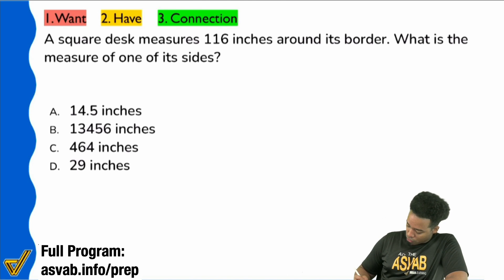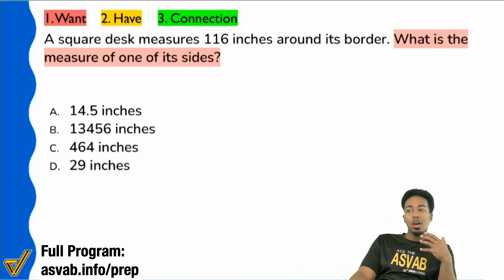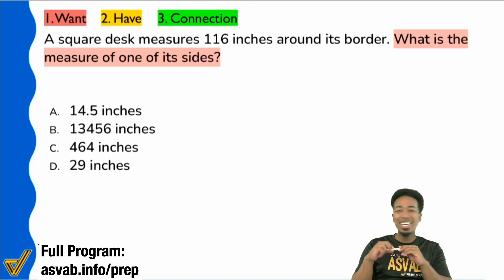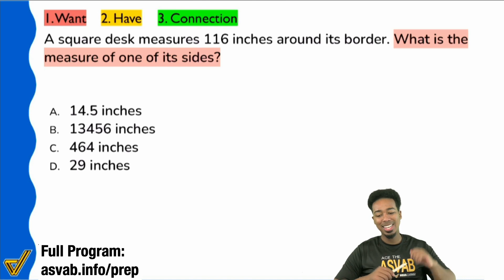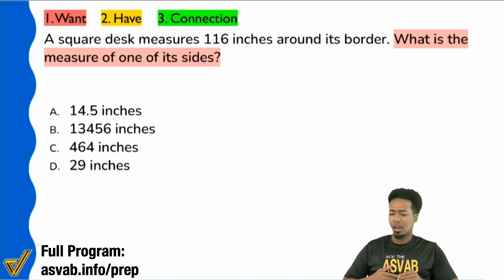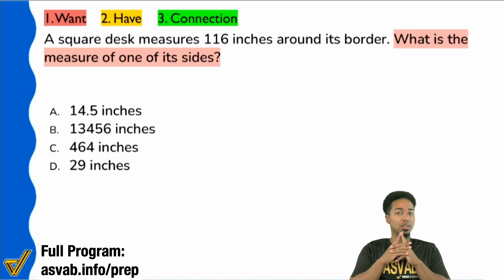It says, hey, right in the beginning, what is the measure of one of its sides? Everybody, is that specific enough for us to label a formula instantaneously? Just that red highlight. What is the measure of one of its sides? Is that by itself enough for us to say, oh yeah, that's going to be area equals length times width, or that's going to be perimeter equals four times side? Or that's going to be this or that. Is that red highlight by itself enough to understand what we're looking for?